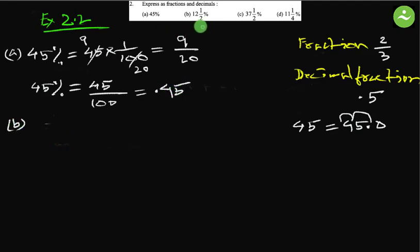B: 12 and half percent. 12 and half percent, first we have to express as fraction equals to 12 and half means 12 into 2, 24 plus 1, 25 by 2. Percent means 1 by 100. Now simplify, divide both by 25. This will be 1 and this will be 4, equals to 1 by 8.